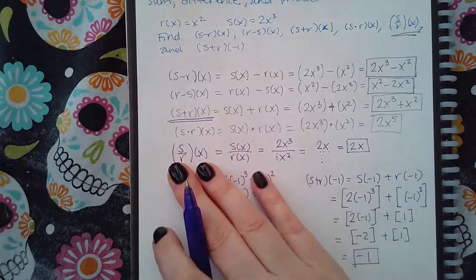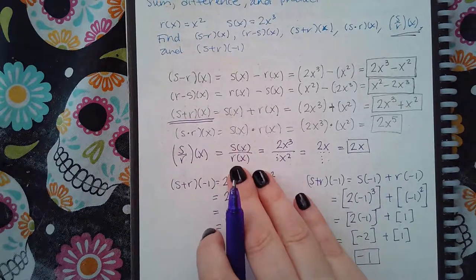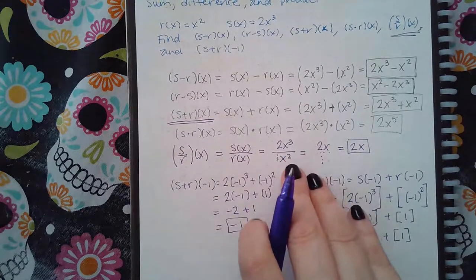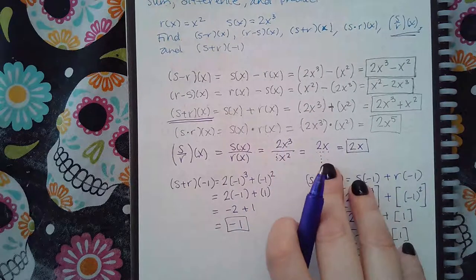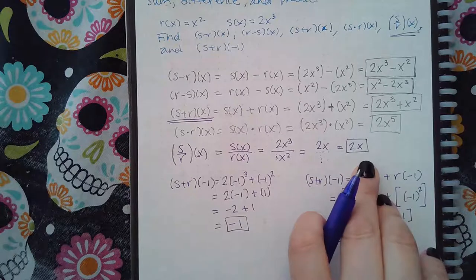Then the last one, (s over r)(x) means s(x) over r(x), which means 2x cubed over x squared, which does reduce by x squared, leaving me with 2x over 1, or just 2x.